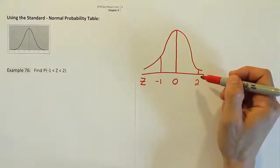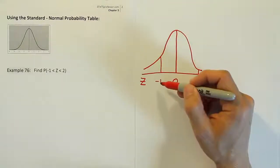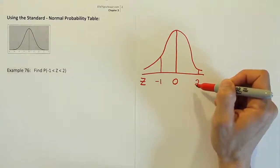So there's approximately where negative 1 and 2 are. We don't have to be precise, it's just the idea that we put them on the right side. If it's negative, it's on the left. If it's positive, it's on the right-hand side of the curve.